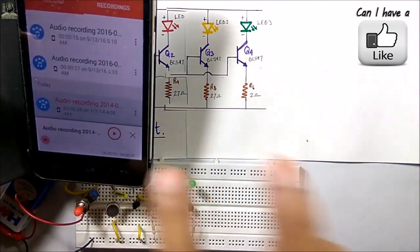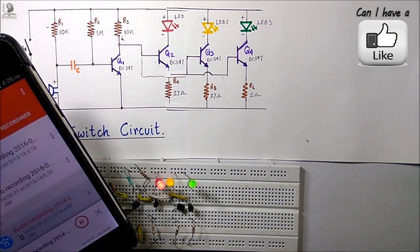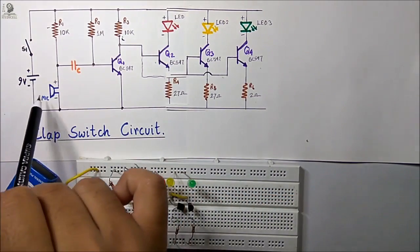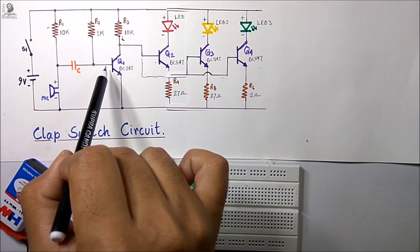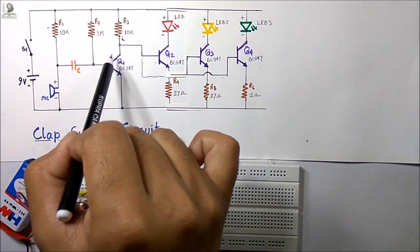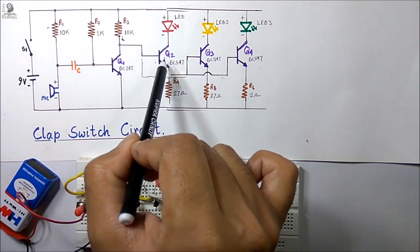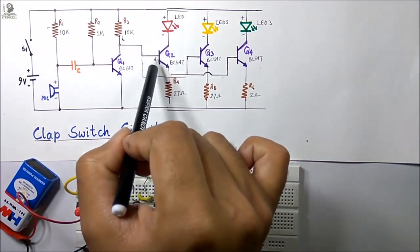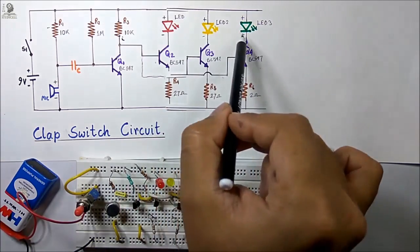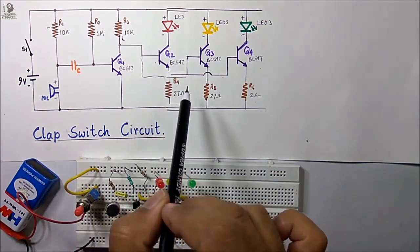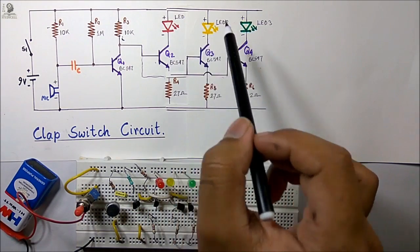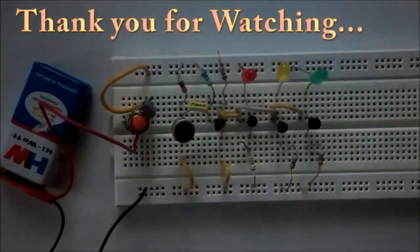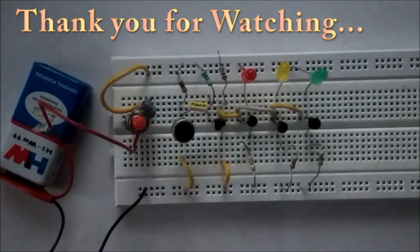Now let me discuss the working principle. After receiving the sound, the mic generates a small signal which is used to turn on the Q1 transistor, and the signal is amplified by Q1. It is then fed to the base terminals of Q2, Q3, and Q4, so those transistors turn on and the LEDs glow. If you want to use any higher-rating lamp like a CFL or LED lamp, you have to change the transistor rating accordingly. Thank you for watching — give a thumbs up if you like the project and don't forget to subscribe to our channel for more such videos.